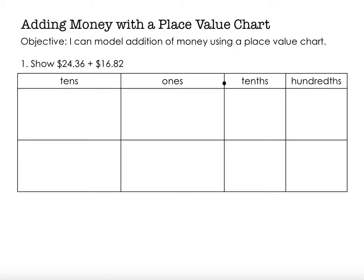The first thing I need to do is to create my place value chart. Each of my money values has a tens place, ones place, tenths place, and hundredths place. So I've made a space for each of those in my place value chart. You can simplify this and just do one line across and some lines down for your place values — you don't need an entire box when you draw your own.